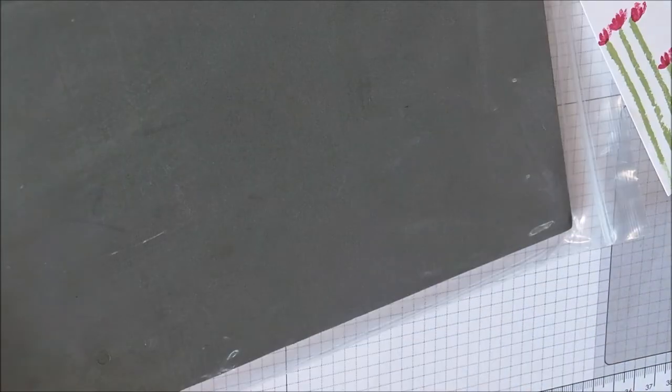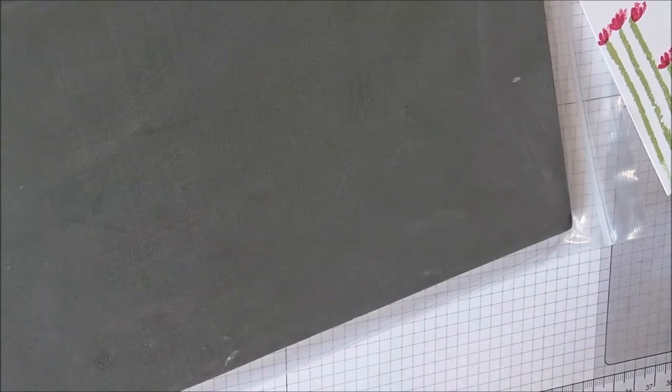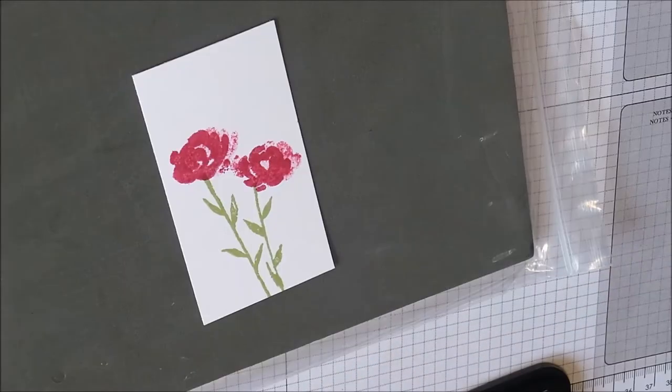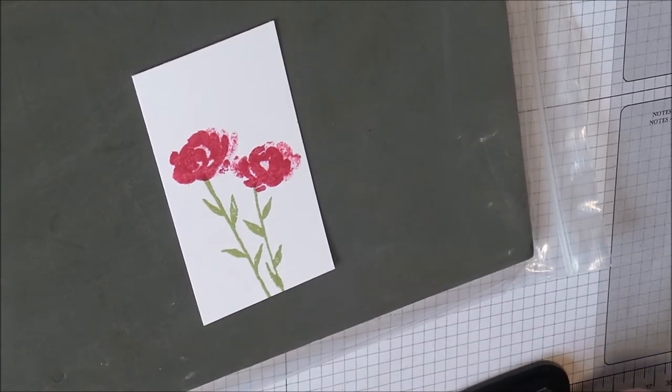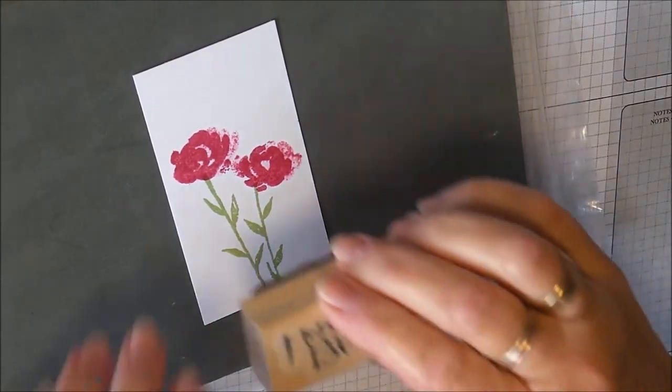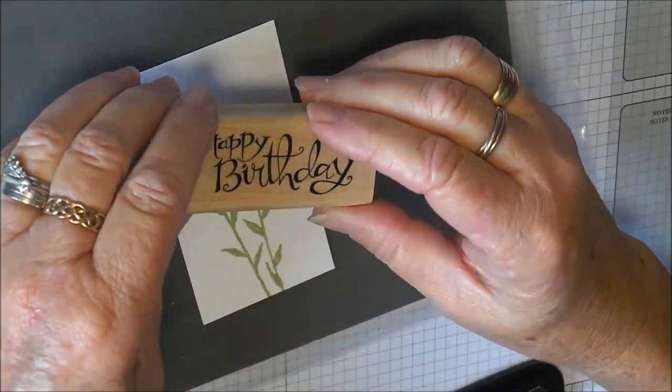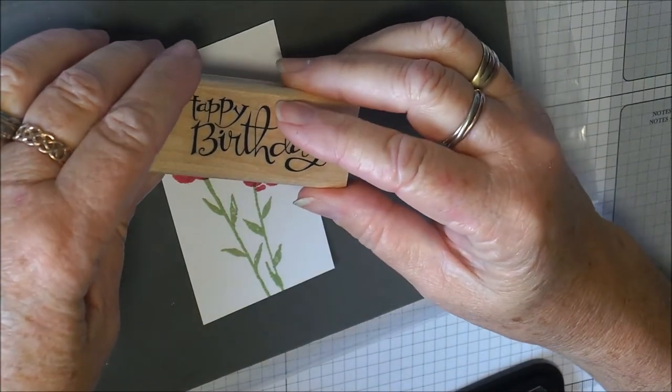Then I'm just going to stamp with Memento black. I'm just going to stamp Happy Birthday, so just mix that up with the Memento black, and I'm going to put it on an angle and stamp Happy Birthday.